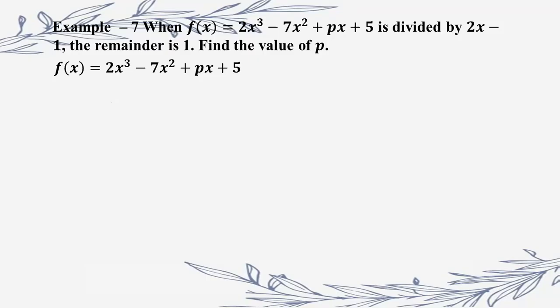The remainder is equal to 2x cubed minus 7x squared plus Px plus 5, and this is divided by 2x minus 1, giving b divided by 2x cubed by 1 divided by 2, which is b by a equals 1 by 2.